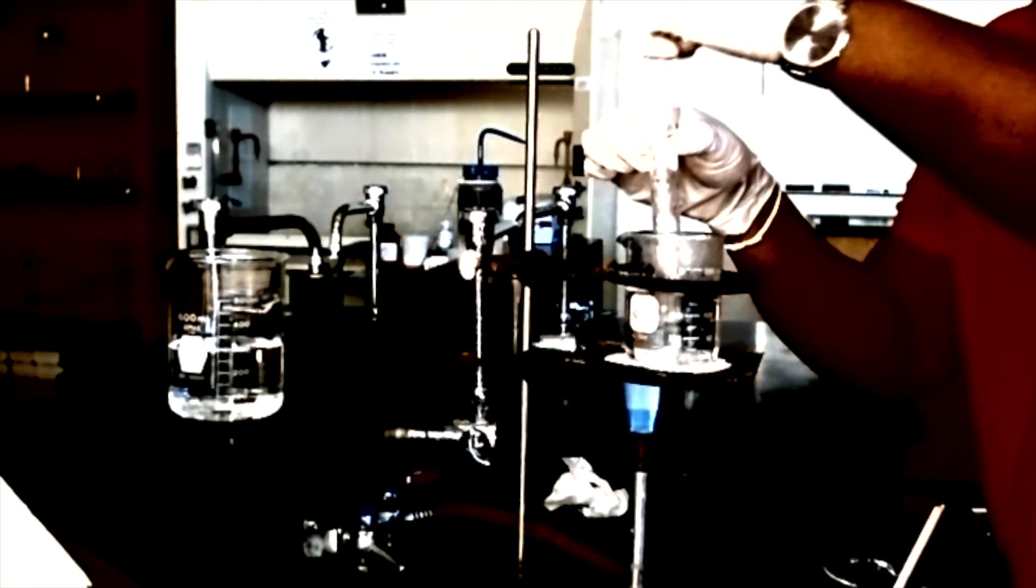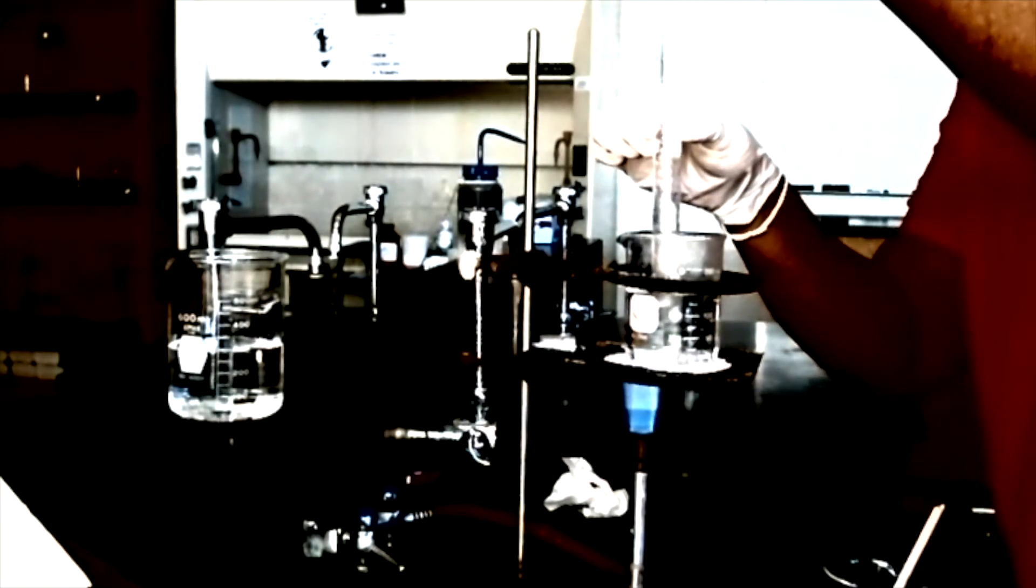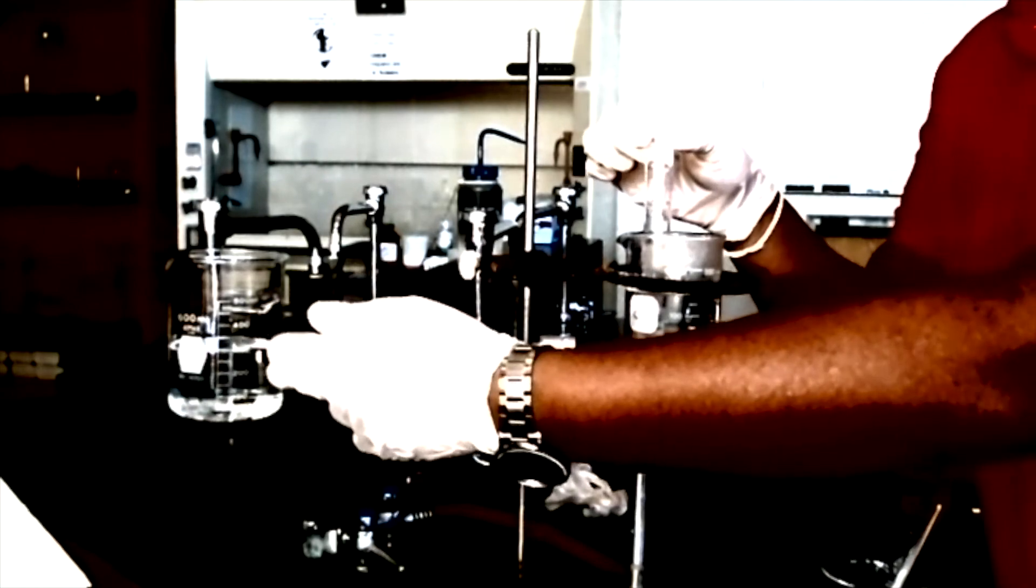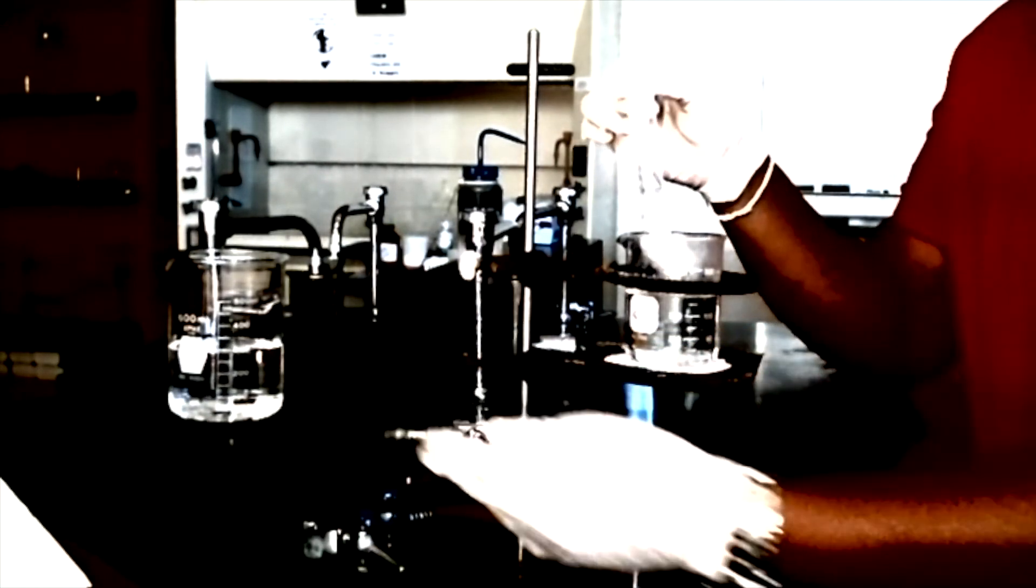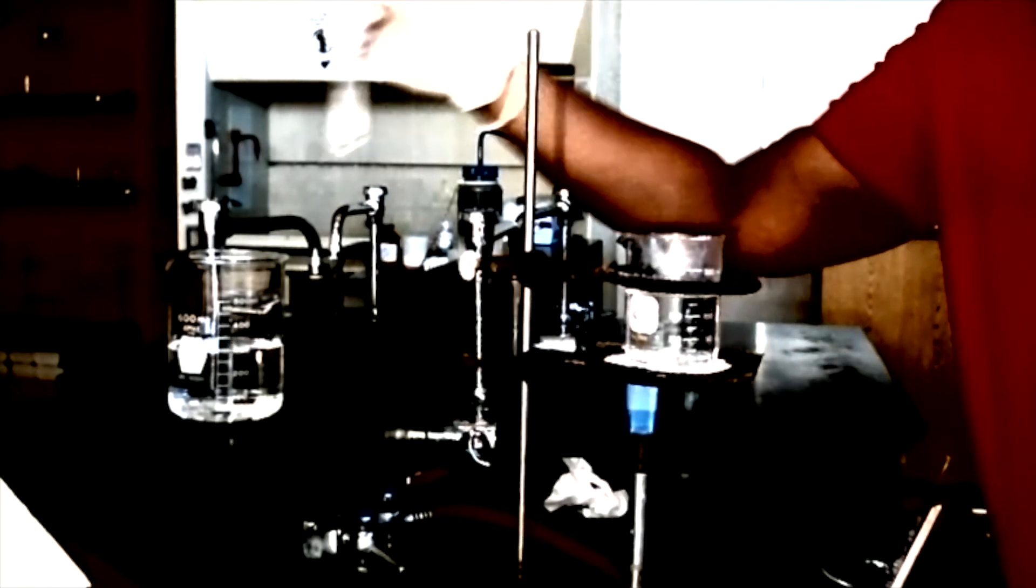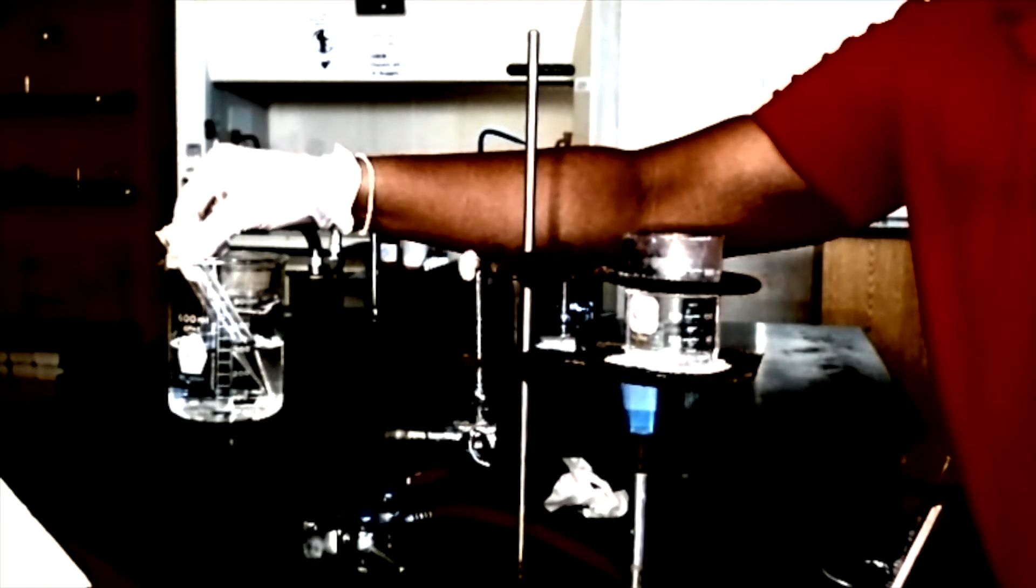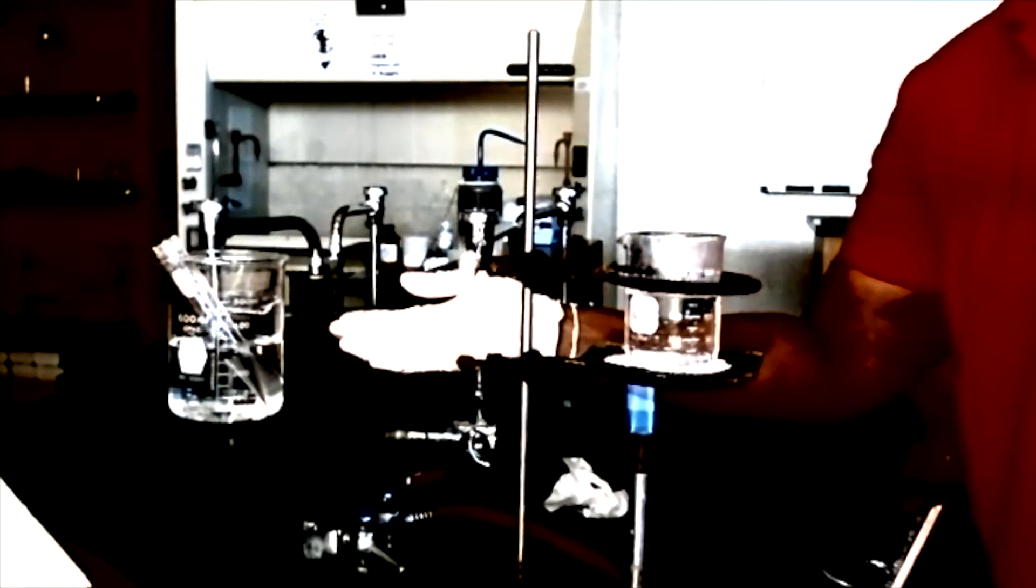The next step we'll be doing is filling a 250 milliliter beaker with room temperature water, placing our sodium thiosulfate solution from our test tube into our room temperature water and allowing it to cool to start the crystallization process. So at this point, our supersaturated solution of sodium thiosulfate is cooling in our room temperature water bath for 15 minutes undisturbed. So after 10 minutes of our sodium thiosulfate solution sitting in our room temperature bath, we are able to see the formation of sodium thiosulfate crystals in our solution.